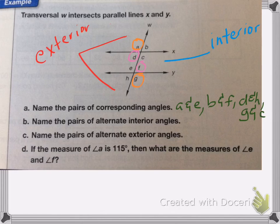So B wants me to name the alternate interior angles. So those are angles D and F, and C and E. And then name the pairs of alternate exterior angles. That would be A and G, and then B and H are the alternate exterior angles.